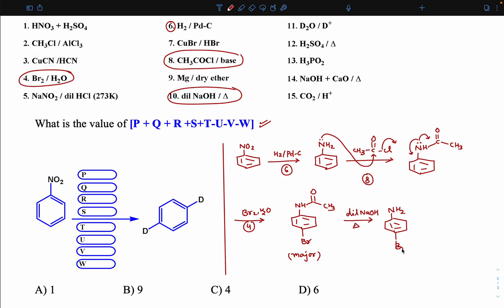Now first convert this NH2 into diazonium salt. 5th number: NaNO2/HCl, you will get diazonium.